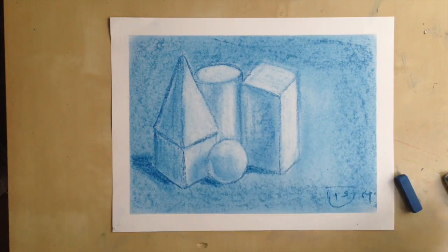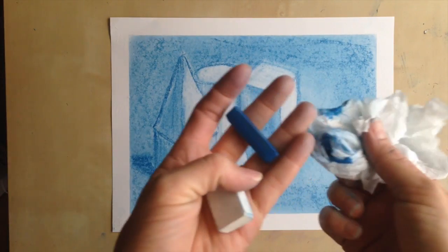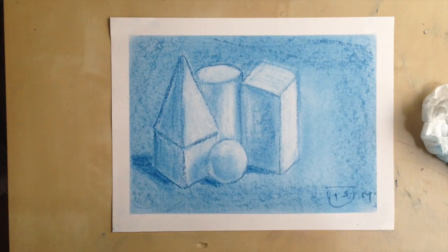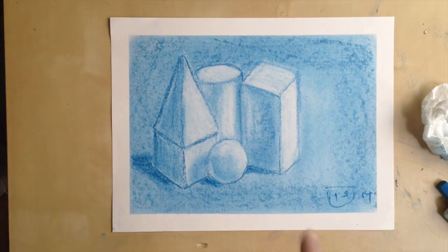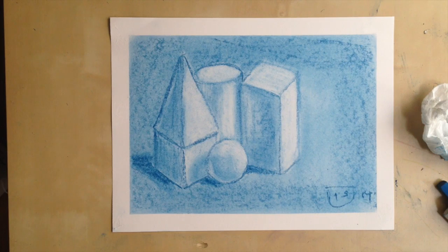Today I'm going to show you how to use chalk, an eraser, toilet paper or tissue paper to create a really quick value study. This is also called the subtractive and additive method of drawing.